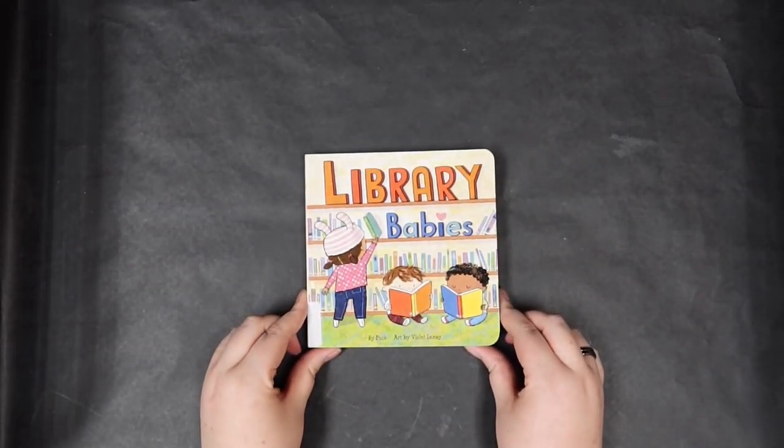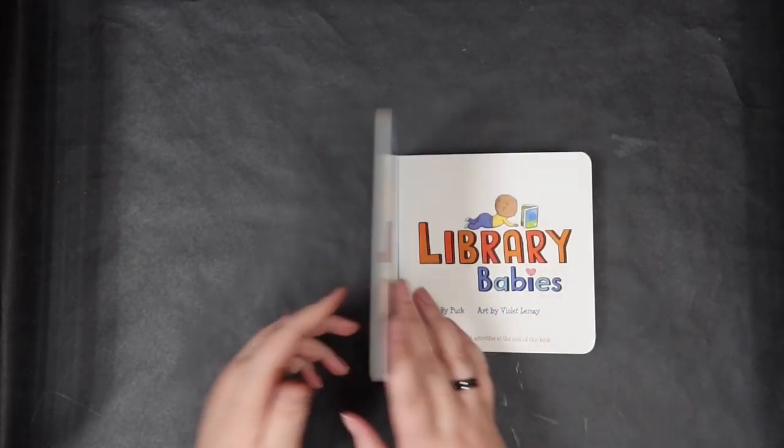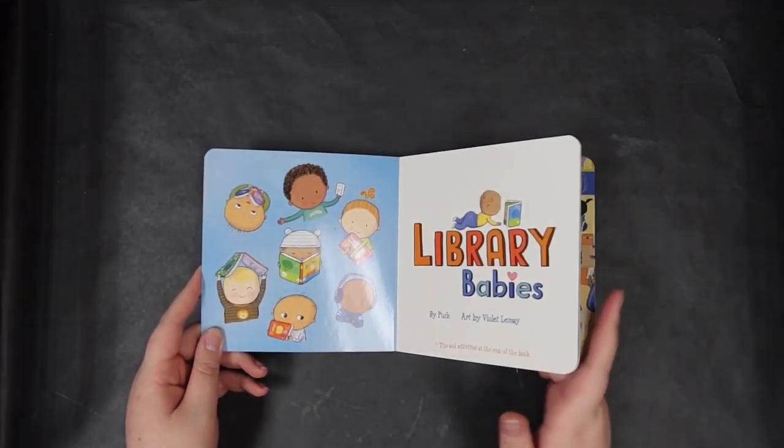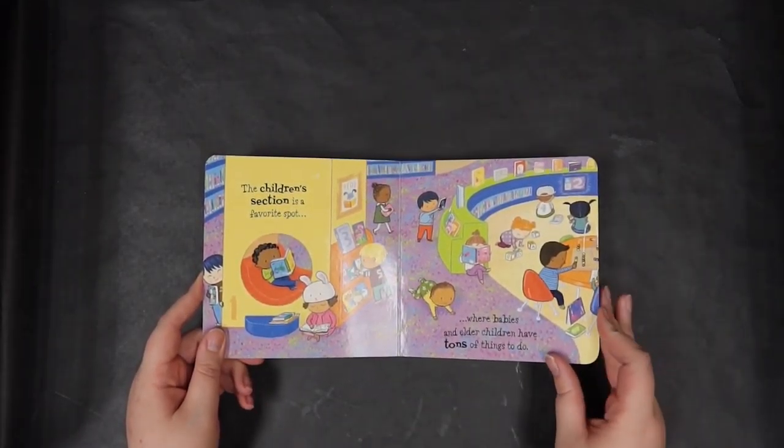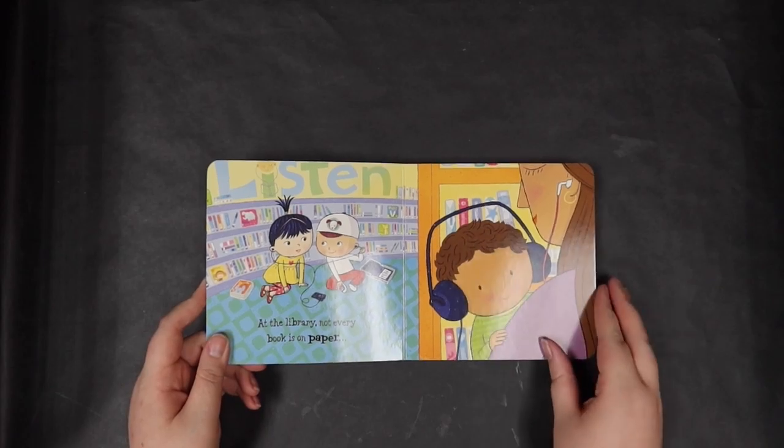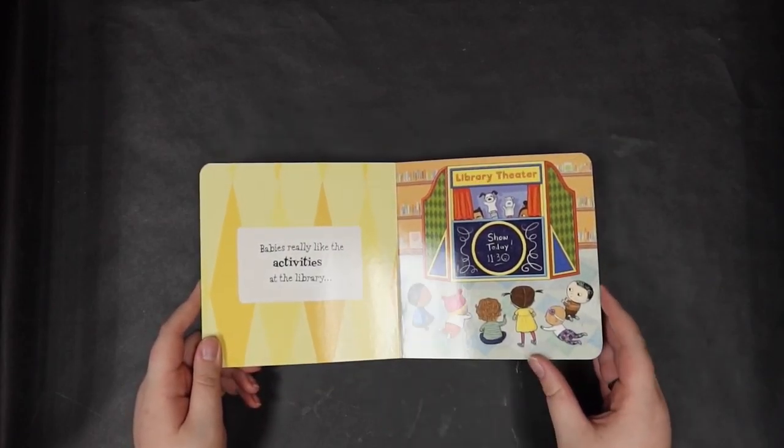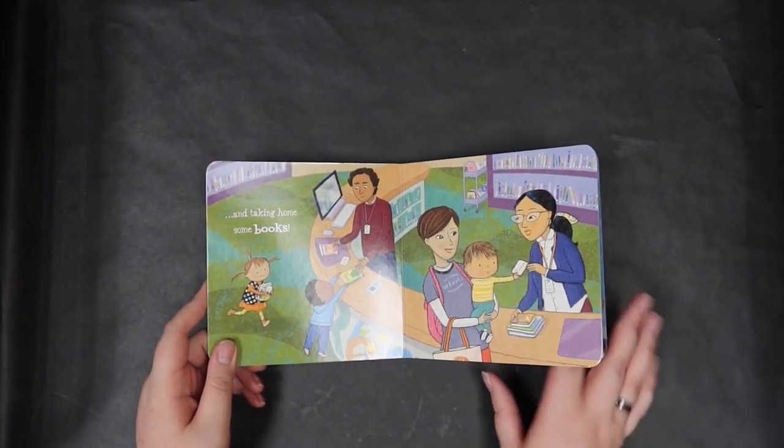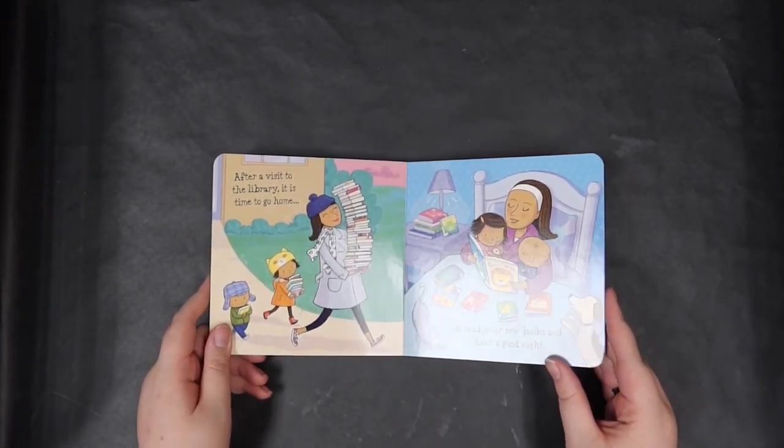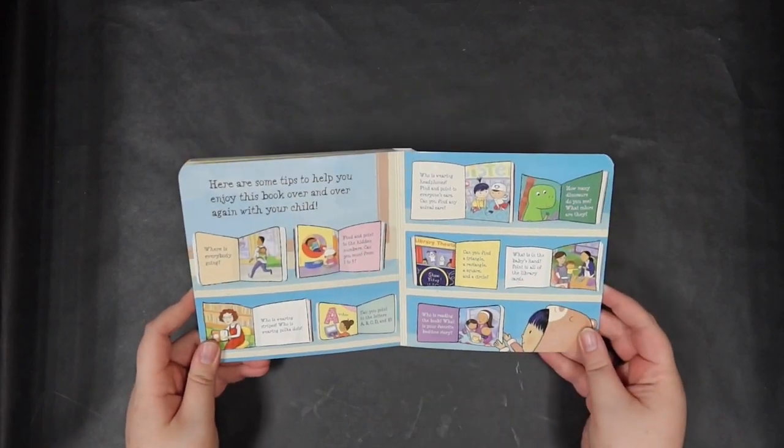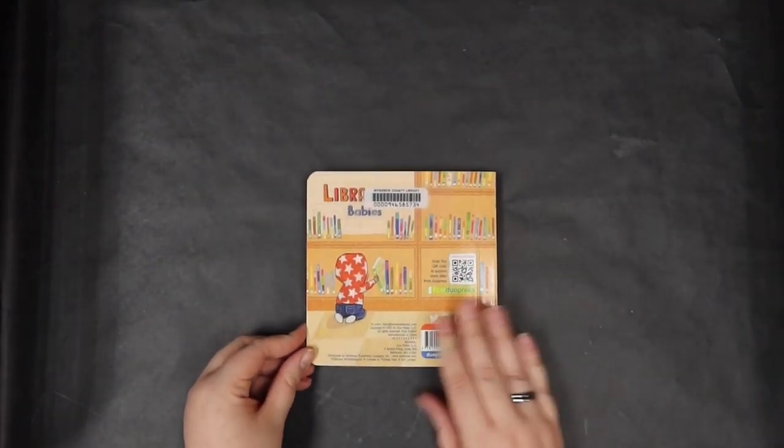Our first book is Library Babies by Puck. What do you do in a library? What can you do in a library? Who do you see in a library? This quick board book introduces you to the very beginnings and basics of a library and the joys of the children's section. What books will you take home from the library?